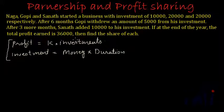So this is a slightly longer and slightly more complicated problem. Here we have three people — Naga, Gopi, and Sanat. They started a business with an investment of 10,000, 20,000, and 20,000 respectively. That means Naga has invested 10,000, Gopi has invested 20,000, and Sanat has invested 20,000.